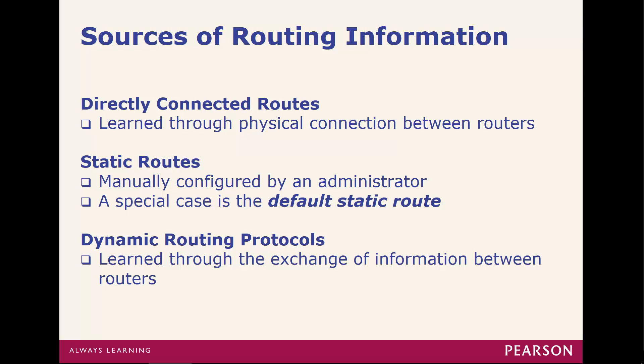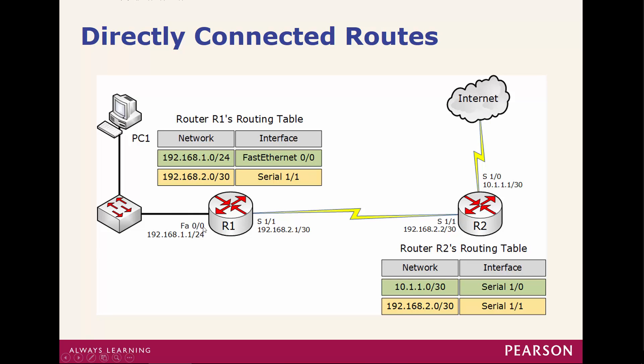Sources of routing information normally come three different ways: directly connected, static, or dynamic routes. Static routes are ones we manually input. Directly connected ones are networks you are right next to. Dynamic routing protocols are ones shared via routing protocols. For example, R1 will know about directly connected networks, and R2 will know about its directly connected networks, but R2 will not know about the 192.168.1 network because it is not directly connected.